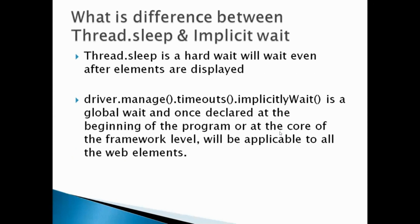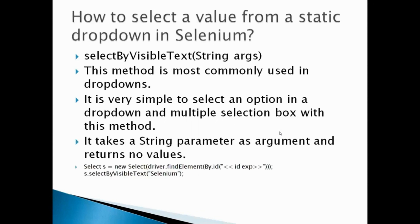What is the difference between Thread.sleep and implicit wait? Thread.sleep is a hard wait — it will wait even after elements are displayed, stopping your script for that number of seconds. Implicit wait is a global wait; once declared at the beginning of your framework, it is applicable to all web elements — meaning if you have 10 lines of code, implicit wait applies to each and every line.